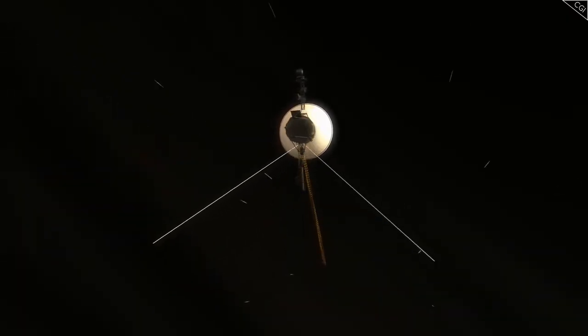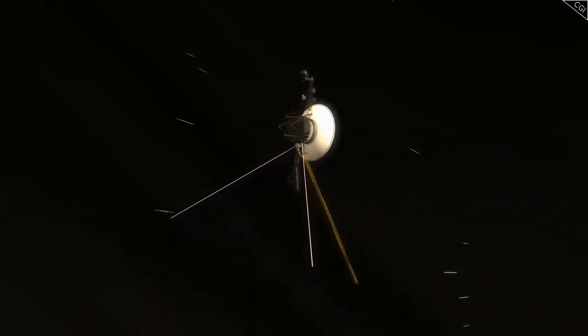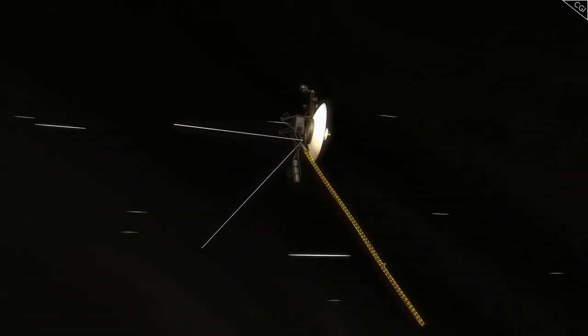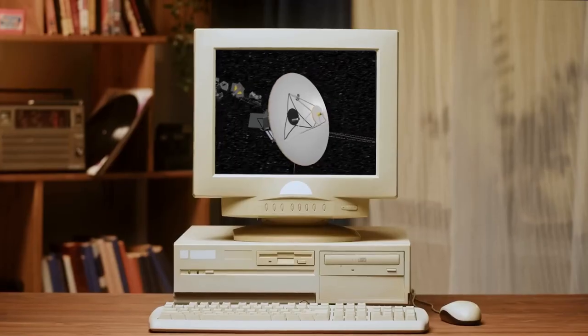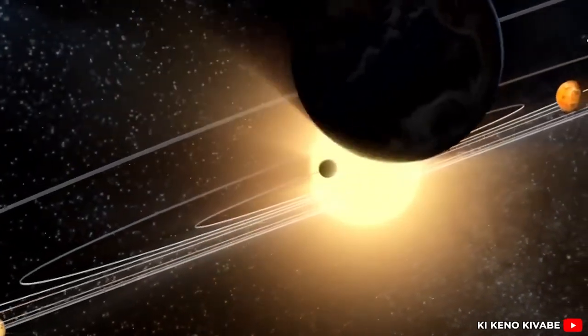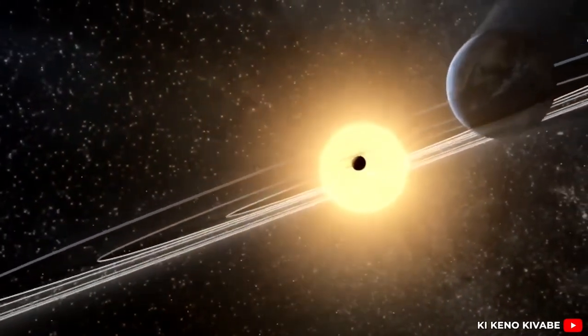NASA's Voyager 1 spacecraft recently communicated using a backup radio transmitter that had been dormant since 1981. This milestone highlights the ingenuity and resilience of the spacecraft, which is now over 15 billion miles from Earth, making it humanity's most distant emissary.